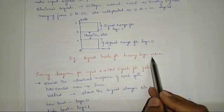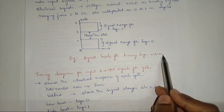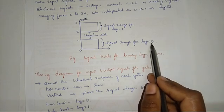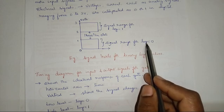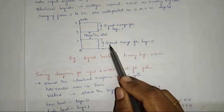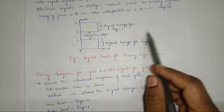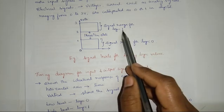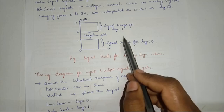This is the signal levels for the binary logic values. In lab experiments, when we want to connect an input logic 0 to any gate, we connect ground to that input. And whenever we want to give the logic 1 value to any gate, we connect VCC to that input.